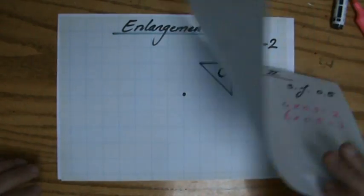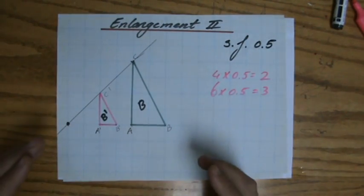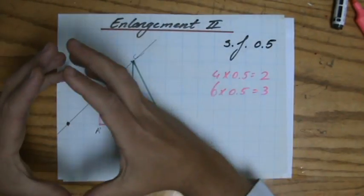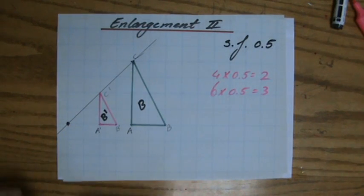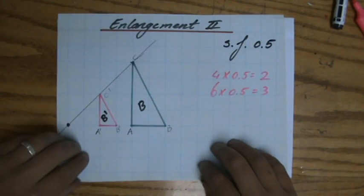Then I showed you what happens if the scale factor is a decimal or fraction between 0 and 1. For 0.5, for instance, we notice that it becomes smaller. And again, the position will also change because of that center of enlargement.